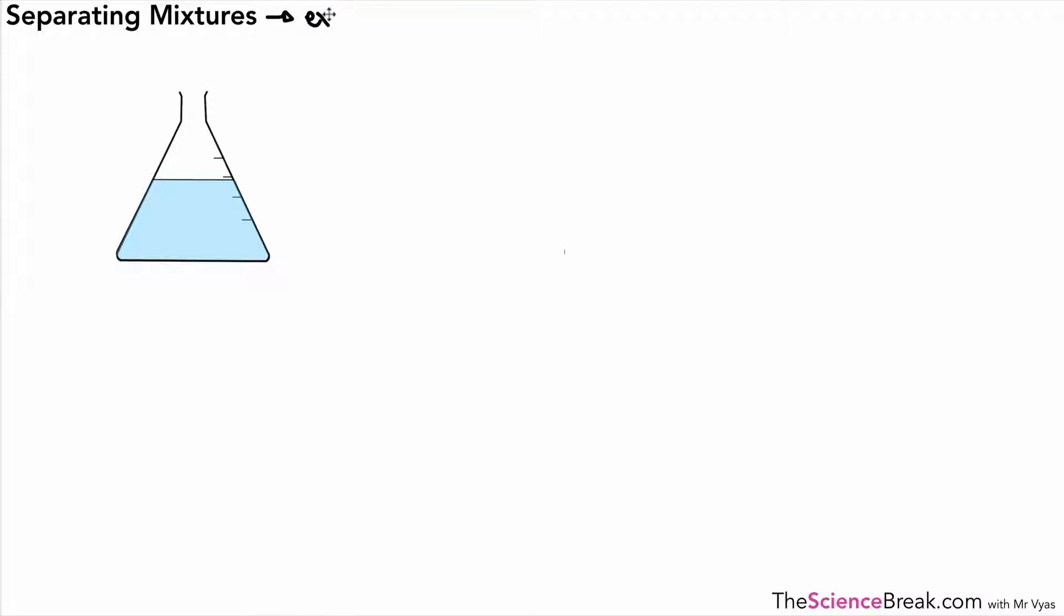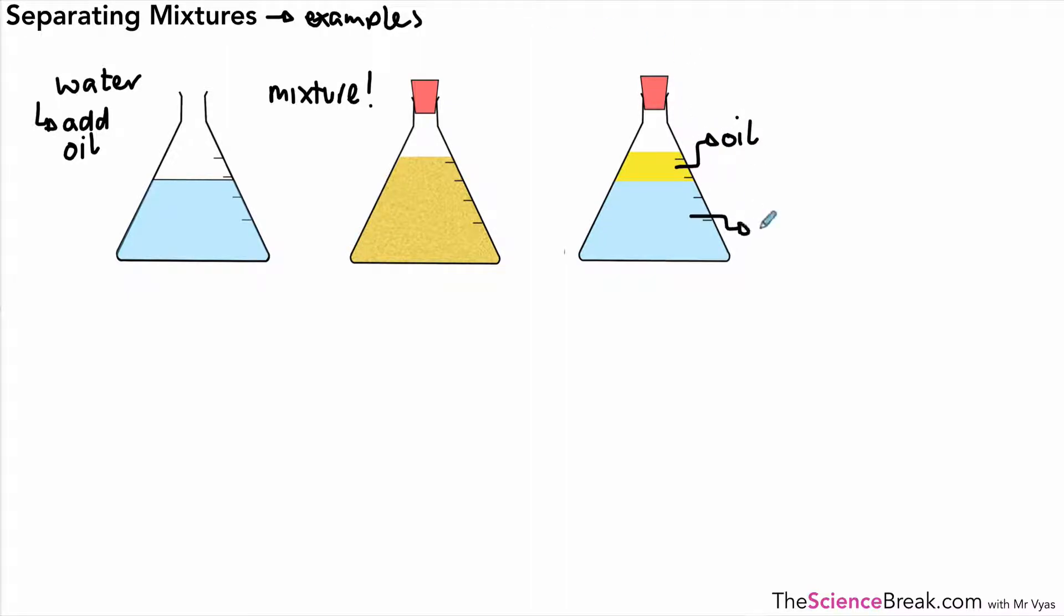For the first one, we've got a little flask there containing water. The example we could use is water with some oil added. So we can add some oil to the water and there we're going to have a mixture. We can put a cork on the flask, give it a good shake to give it a good mix, and then leave it to settle for a while. In fact, the mixture will then automatically separate out. The oil floats on top of the water, and the oil stays as oil, the water stays as water. There's no change in chemical properties.